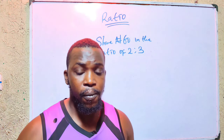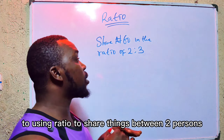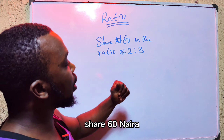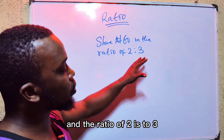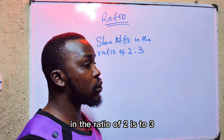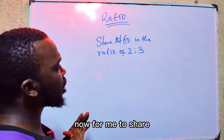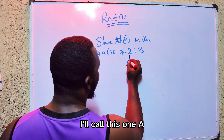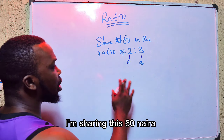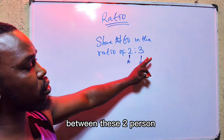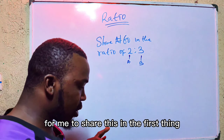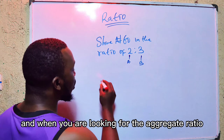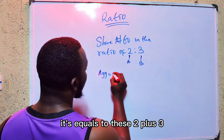Ratio is what is used to measure two quantities of something. For example, two oranges is to one orange — it becomes a ratio. Five mangoes is to two oranges — it becomes a ratio. Ten men is to five women — it becomes a ratio. We have used ratio to measure men and women.